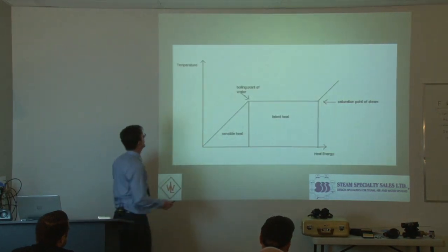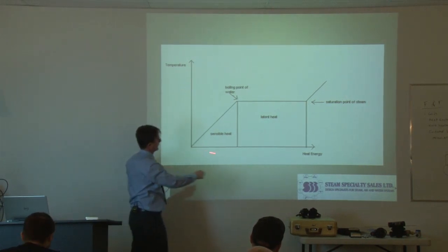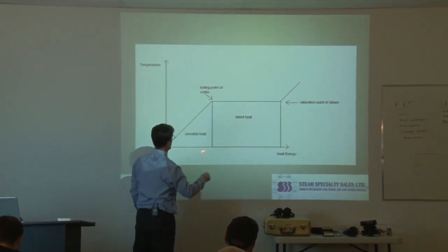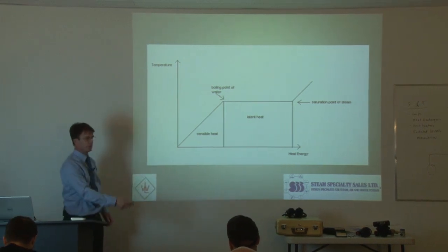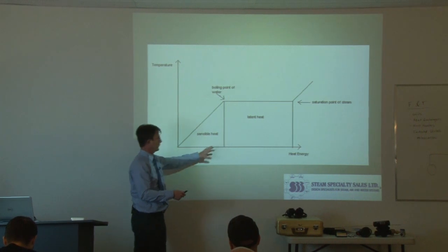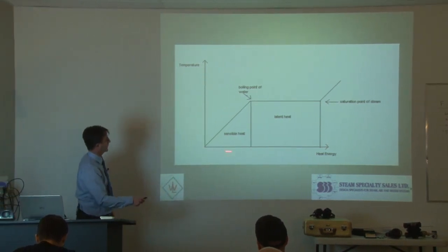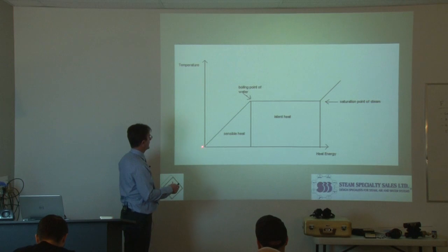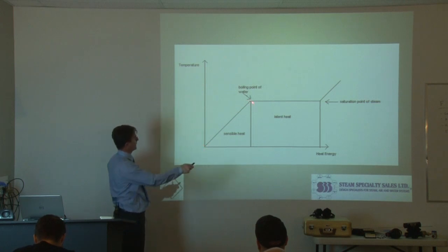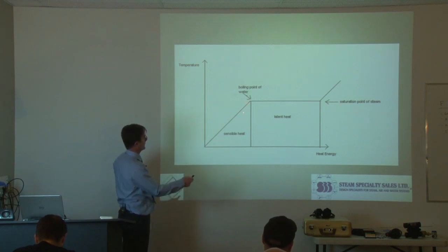So graphically, this is what it looks like. You have temperature on the y-axis, which is your vertical line, and heat energy down here on your BTUs, or kilojoules or watts, whatever term you're using for heat energy — we're just talking about the concept here. So down here you have the freezing point, up here you have the boiling point. To get from here to there, that's your sensible heat. So we've raised the temperature. Sensible heat raises the temperature.